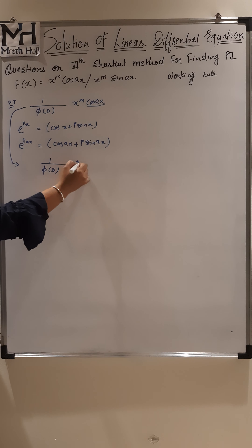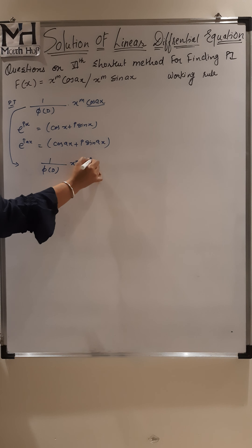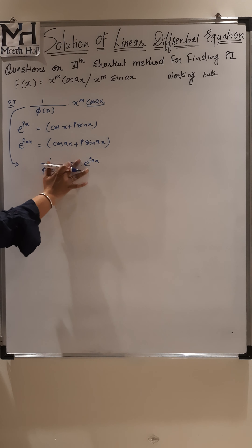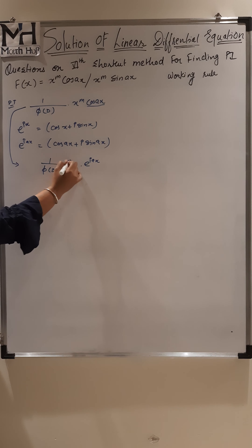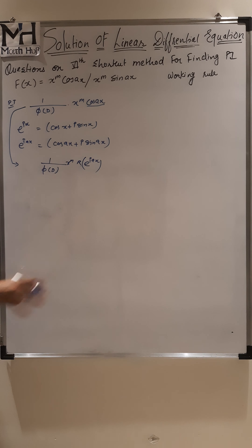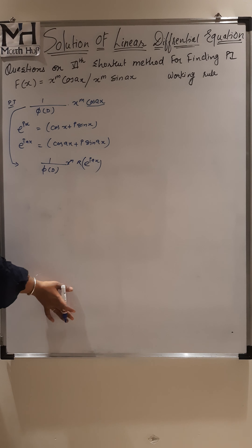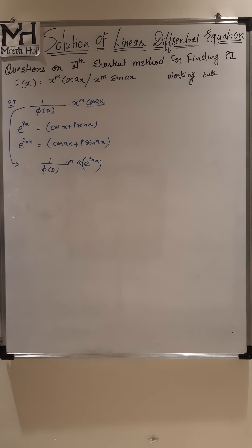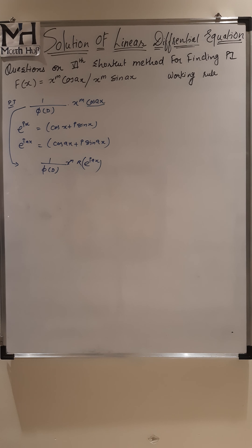Here we are considering the real part. Instead of showing it at every step, at the last step when we get the final answer, we consider the real part and ignore the imaginary. If there is sine instead of cosine, we consider the imaginary part and ignore the real part. That's it. This is our working rule.